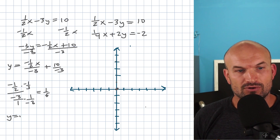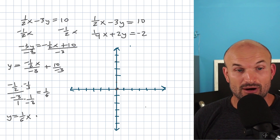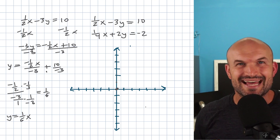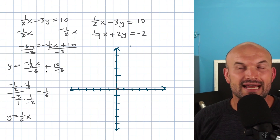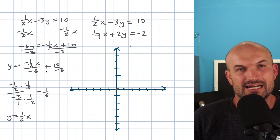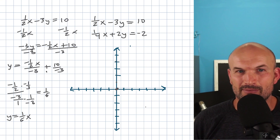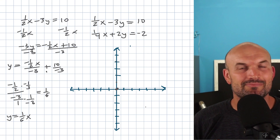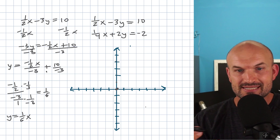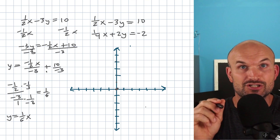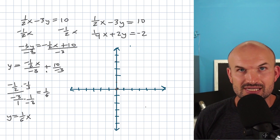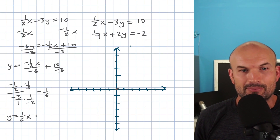So y equals 1/6 x — that represents the slope. Then what about the y-intercept, which is 10 over negative 3? Negative 3 does not evenly divide into 10, so should I leave it as an improper fraction or rewrite it as a mixed number? Mixed numbers can confuse students, but they're actually helpful when graphing. For writing the equation, let's just leave it as an improper fraction for now.